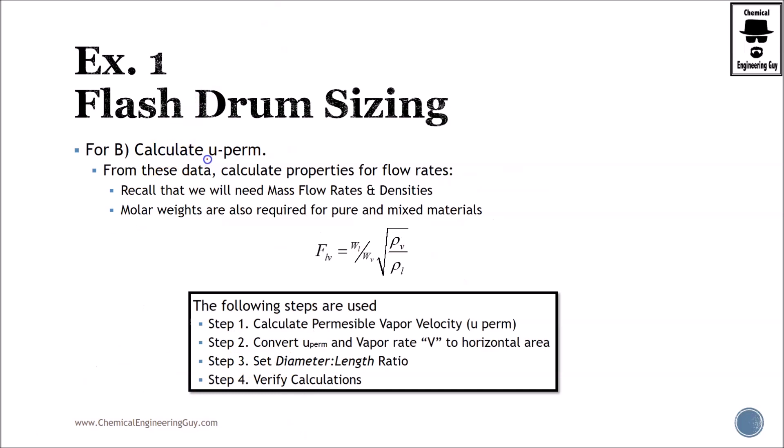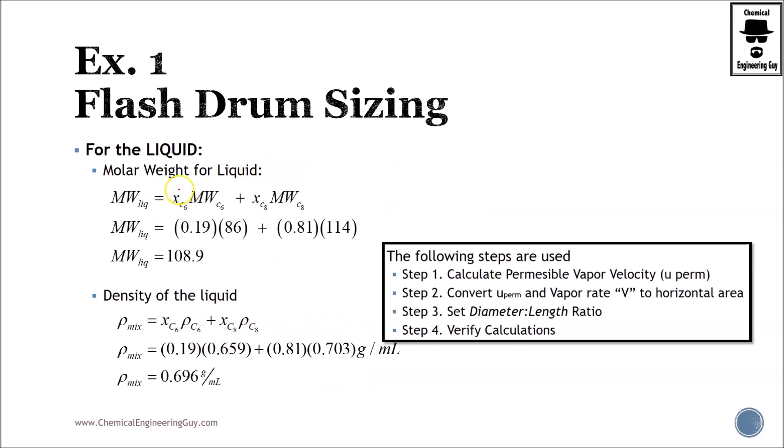The interesting part will be to calculate the permissible velocity. From this, we will require the following: mass flow rates, mass densities, molar weights, because we want to calculate FLV. Remember, the steps for a design of a flash drum are these. We are in step number one. I will get first the one of the liquid. The molar weight of the liquid is nothing more than the average according to their compositions. 81% is octane, this is hexane molar weight and molar weight of octane. It should be something around near the octane value. The densities can be the same, so we just add the proportion of each value and the mass values as well. We got something around 0.696.